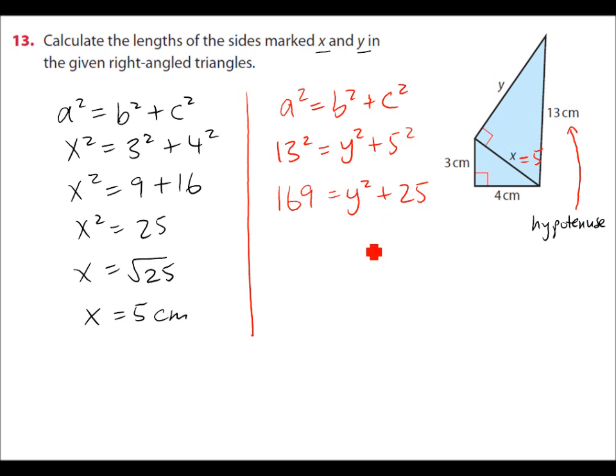So take 25 from 169. This gives us 144 equal to y squared. You might recognize this, that y then is the square root of 144, which is of course 12. That's in centimeters.